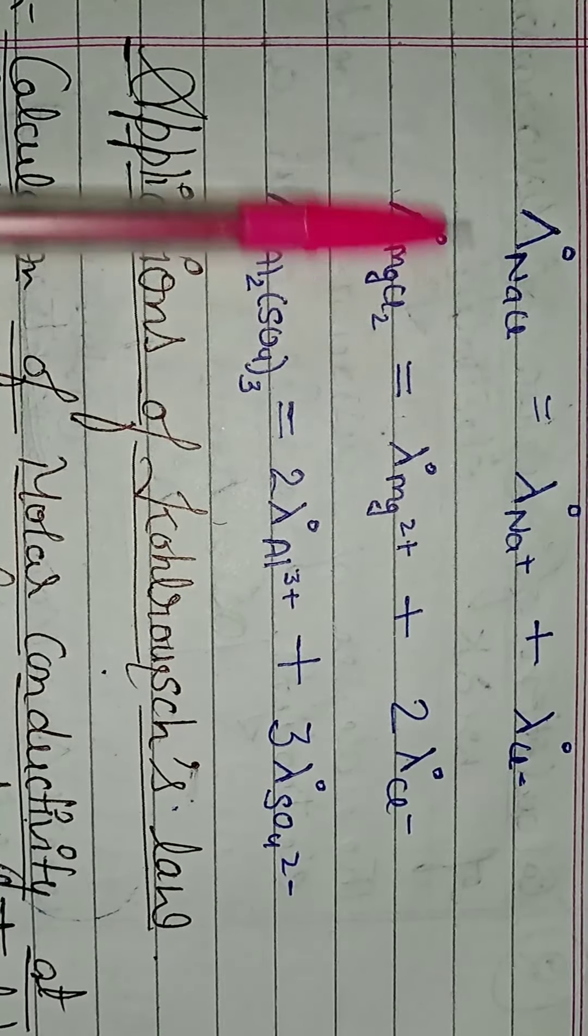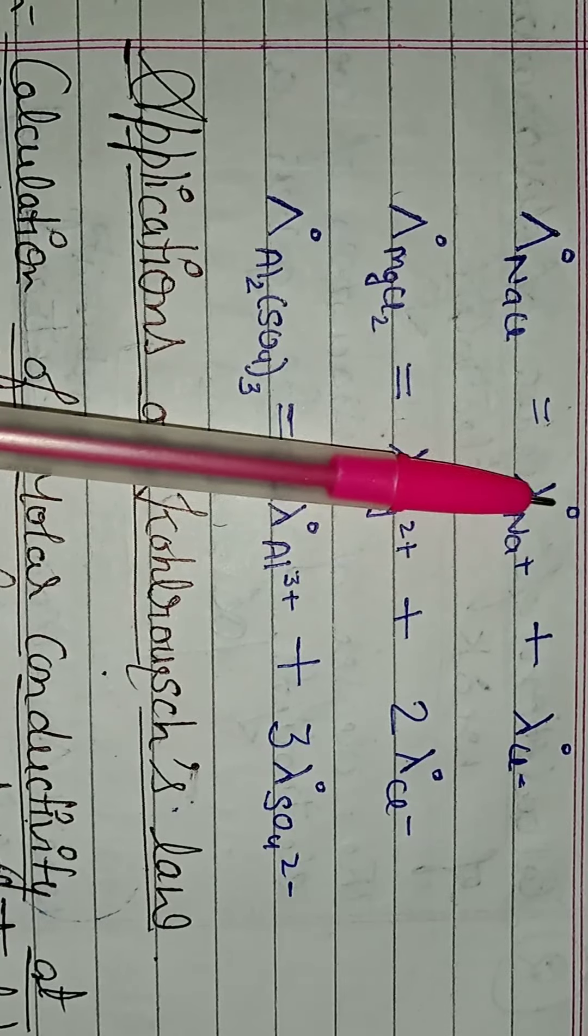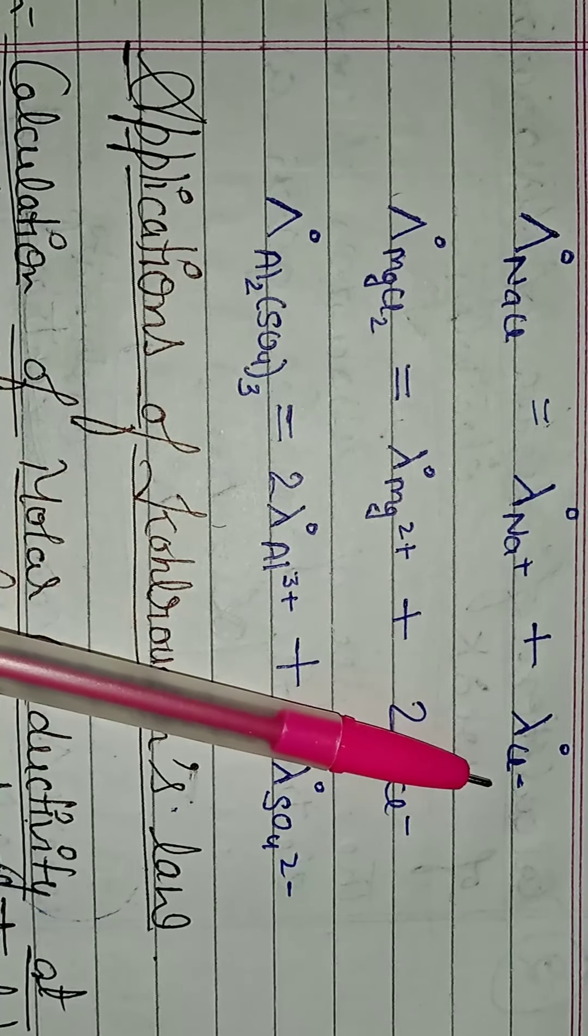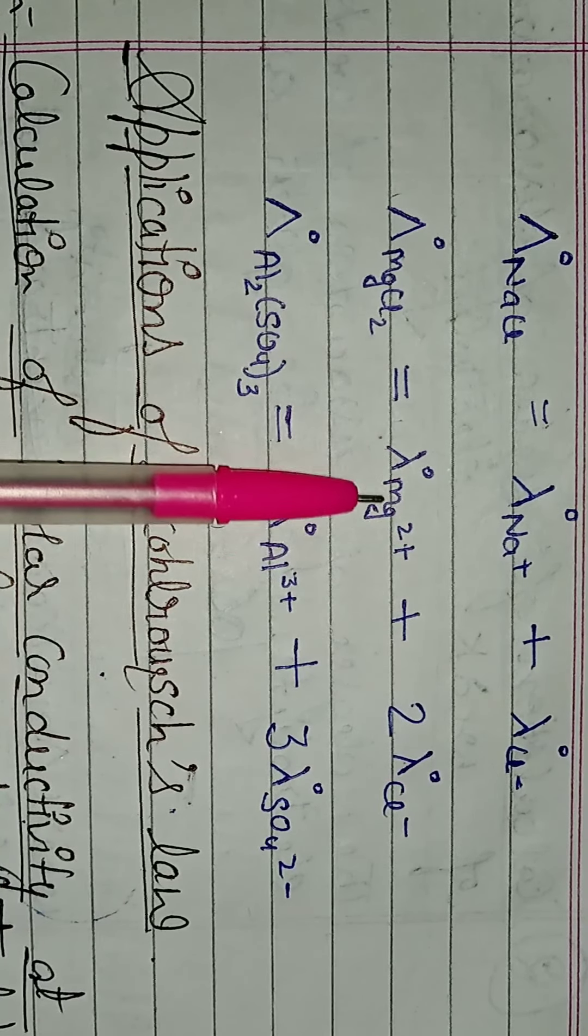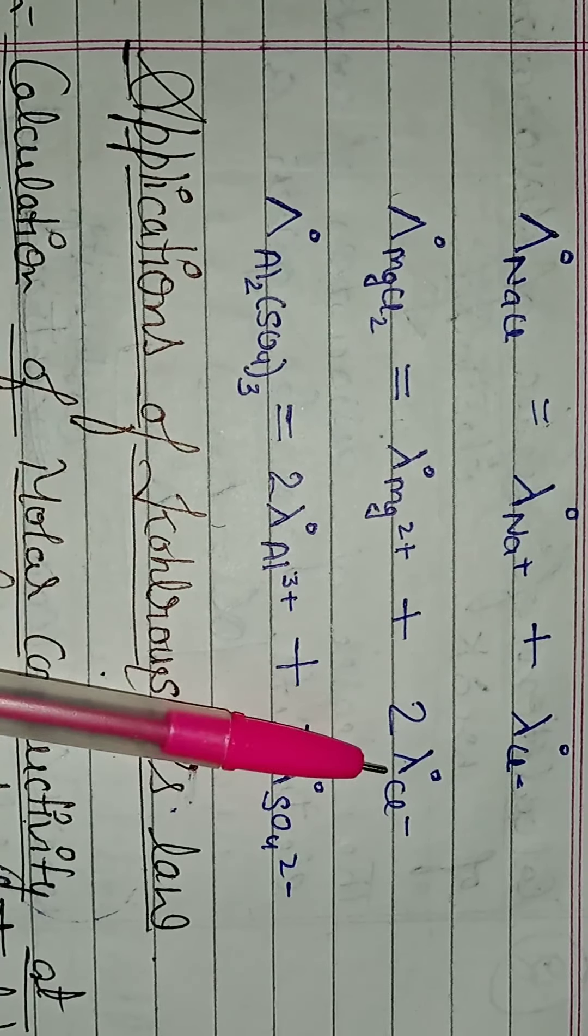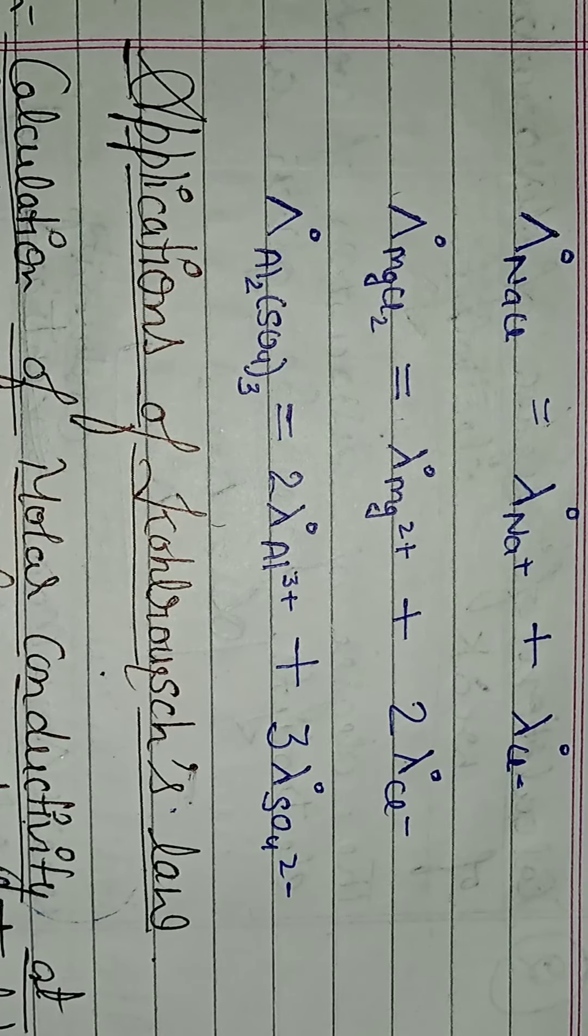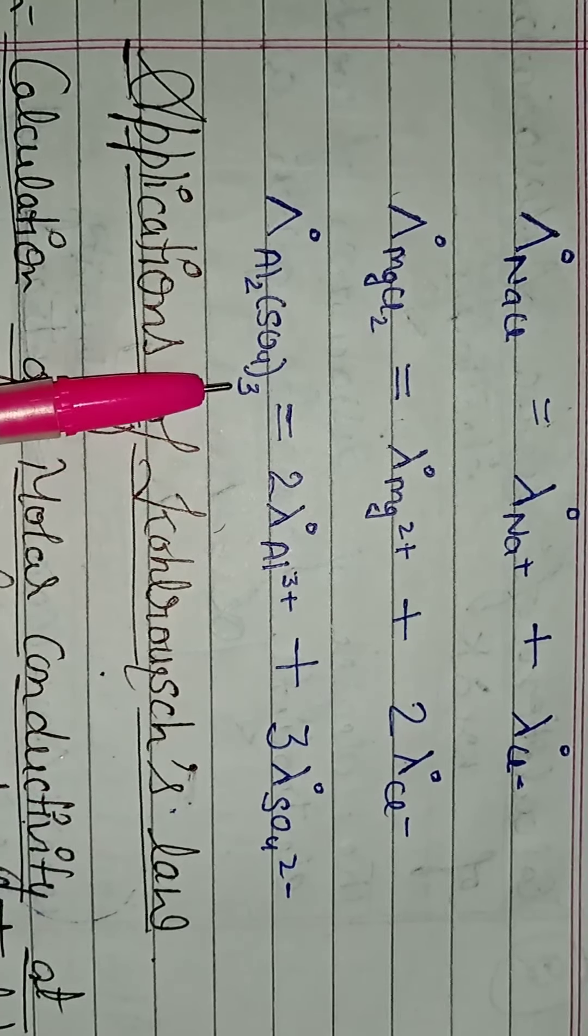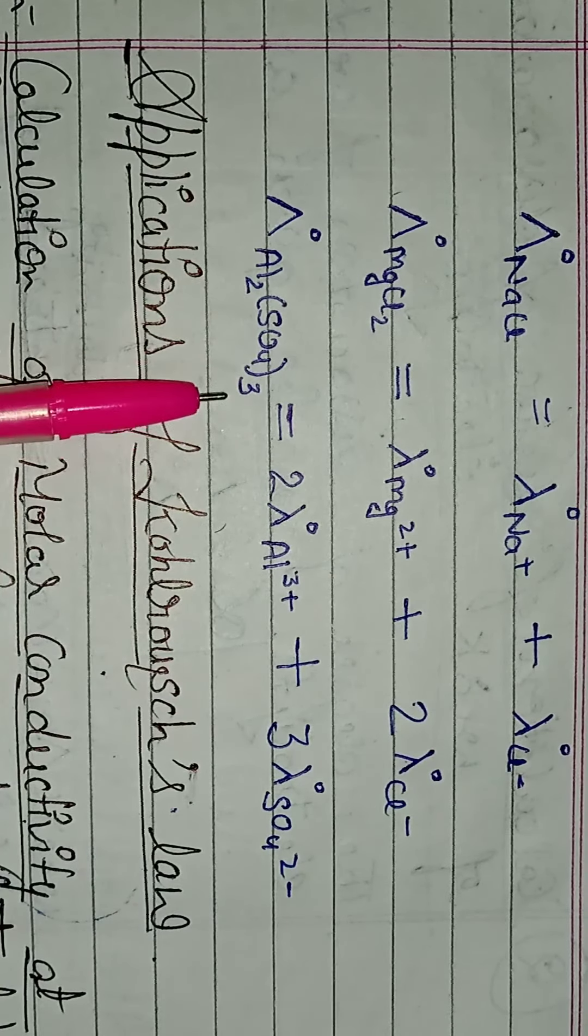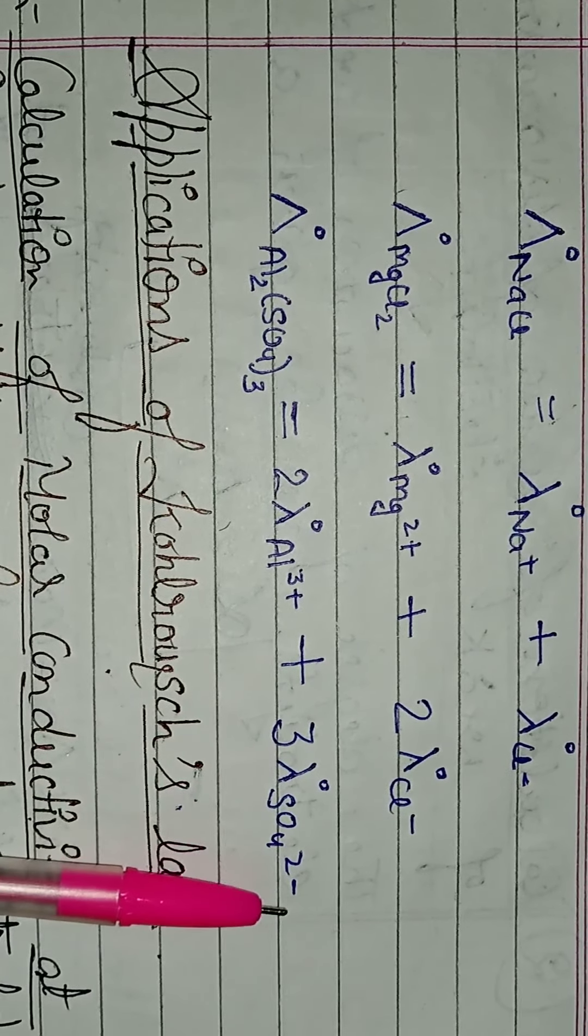Dekhiye, jaise NaCl ka hai ye, to lambda Na positive, lambda Cl negative. MgCl2 ka, lambda Mg2+ positive, 2 lambda Cl negative. Lambda Al2(SO4)3, to 2 lambda naught Al3+ positive plus 3, 3 hai na SO4, to 3 lambda naught SO4 2- negative.